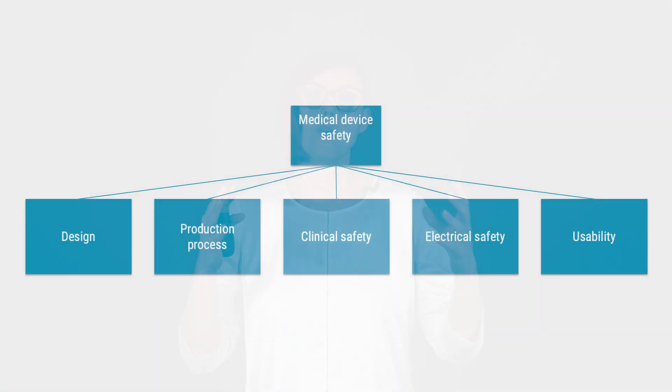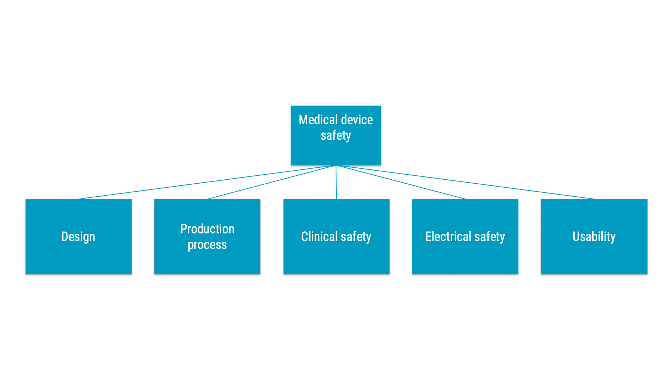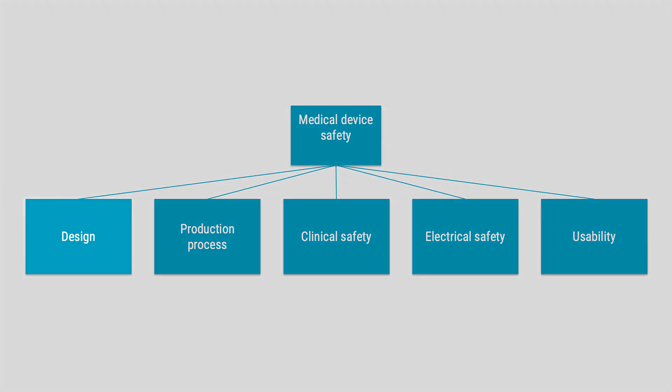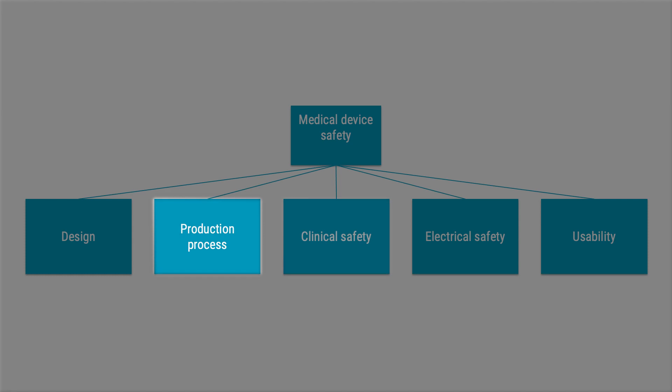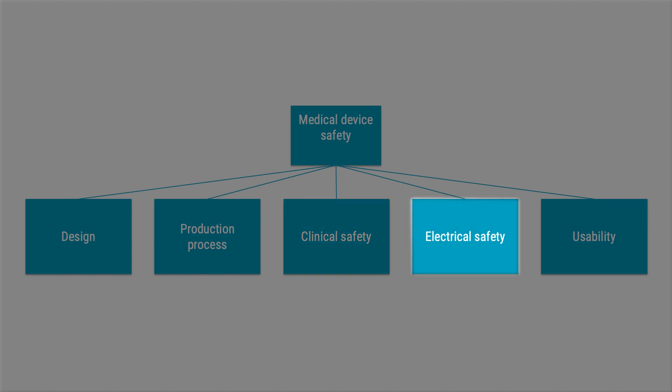Let's take one more look at the relationship between safety and risk management and safety and usability engineering. Medical device risk management, according to ISO 14971, is focused on the safety of the medical device in general. That overall safety is based on a lot of different areas — for example, risks from design flaws or failures in production, clinical safety including side effects or after effects, electrical safety, and of course the usability of the medical device.